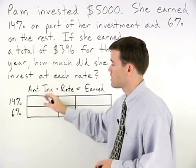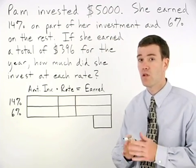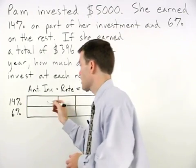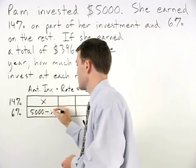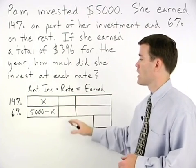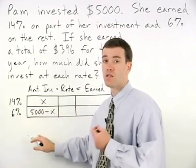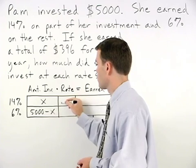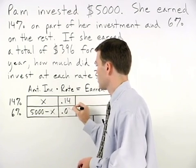For the amount invested column, we know that Pam invested $5,000, but we don't know how much she invested at each rate, so we use x and 5,000 minus x to represent the amount she invested at each rate. For the rate column, we translate our two percentages to decimal form, so 14% becomes .14 and 6% becomes .06.